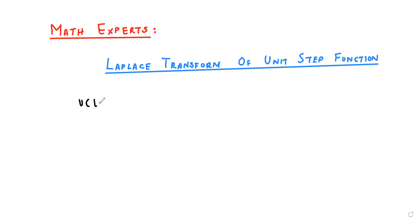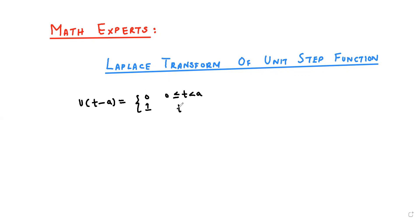u(t - a) is equal to 0 when t is less than a, and equal to 1 when t is greater than or equal to a. It is basically a piecewise function. So this is the unit step function.